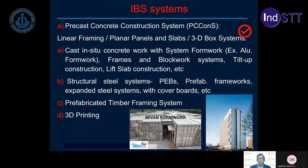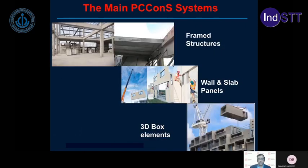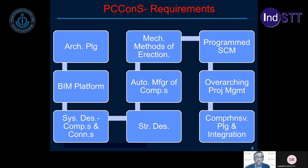Of the various IBS systems available, I will be focusing mainly on precast concrete construction systems, which I'm calling PC-Cons. There are three broad systems in precast concrete for buildings: the frame structure with infill panels or walls and slab panels, or 3D box elements. The basic requirements for precast concrete construction start with architectural planning, facilitated by a BIM platform, then systematic design of components and connections, structural design, automated manufacture of components, and mechanized methods of erection at the site, with supply chain management to bring components in the right order.